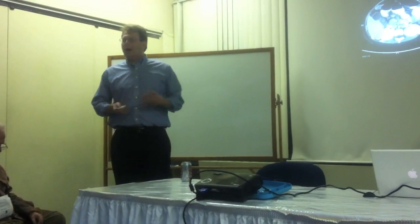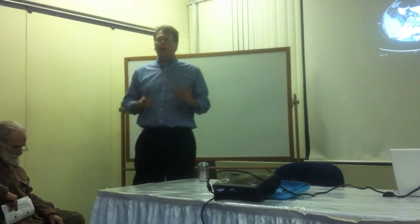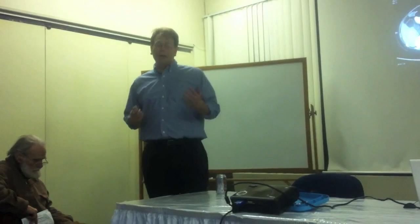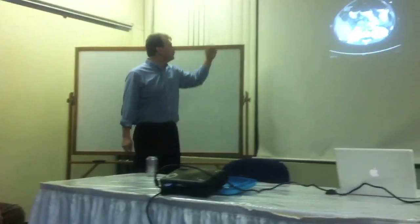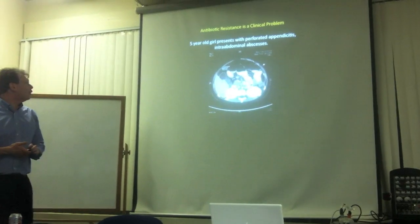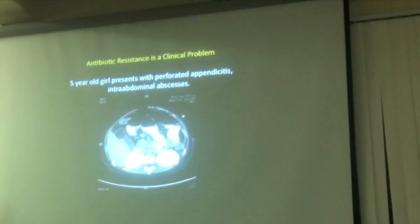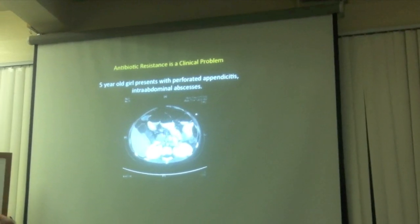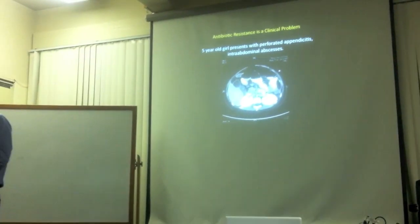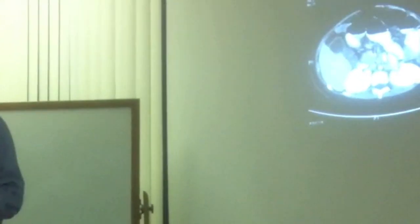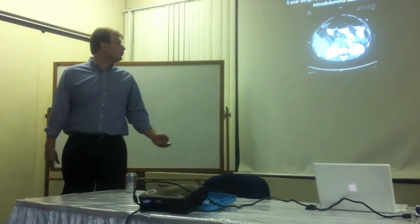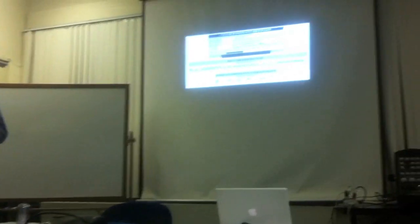I'm going to start with a clinical case. On a typical day on the infectious disease service at Columbia, this is something I might see in the hospital. A five-year-old girl presented with perforated appendicitis and intra-abdominal abscesses. On a CT scan you can see two collections of fluid inside her abdomen containing bacteria and white blood cells — her immune system is trying to fight them off. As infectious disease specialists, we help pediatricians and surgeons best treat these diseases.